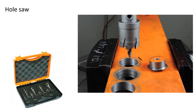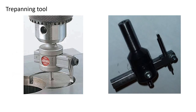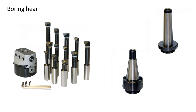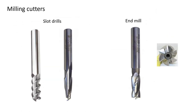Hole saws are available in sets or individually in high-speed steel or carbide tipped. As with the annular cutter, a slug is produced which can be ejected via a spring or manually. The trepanning tool is a close relative to the hole saw but uses a single tip and can be adjusted for diameter. A boring head can also be used for trepanning, manufacturing, or finish-sizing holes, with the advantage of adjustable size, cutting conditions, and surface finish control. Milling cutters can produce holes — slot drills can start holes, but end mills, lacking cutting edges in the centre, can only finish-size holes.